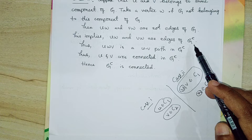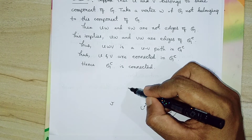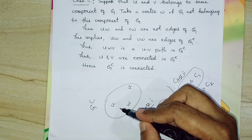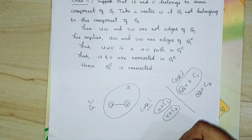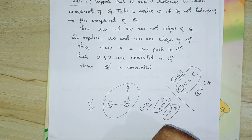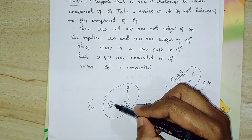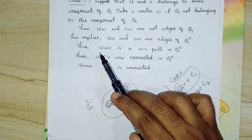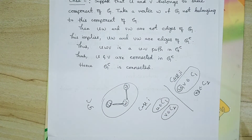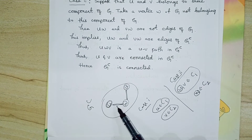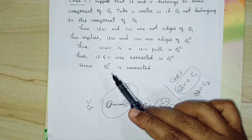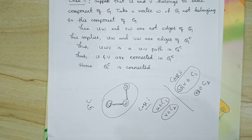Since UW and VW are not edges of G, they are edges of G complement. So in G complement we have the edges UW and VW. Therefore U — W — V is a path from U to V in G complement. Thus there exists a path between U and V, so U and V are connected in G complement. Since U and V were arbitrarily chosen, every pair of vertices of G complement is connected, and therefore G complement is connected.